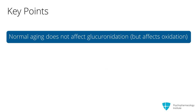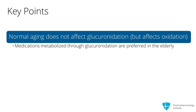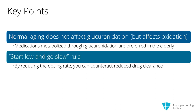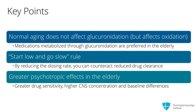Key points for this section: Normal aging does not affect glucuronidation reactions, but does affect oxidation reactions — so medications metabolized through glucuronidation are preferred in the elderly. The rationale behind the start-low-and-go-slow rule is that by reducing the dosing rate, you can counteract reduced drug clearance. Greater psychotropic effects in elders may be due to greater drug sensitivity, higher CNS concentrations, or baseline differences.